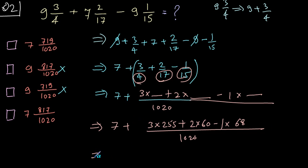If you solve this, you get the answer as 7 plus, if you solve this completely, you get the answer 817 by 1020, which comes out as 7817 by 1020. So the answer here is option number D.